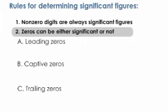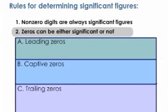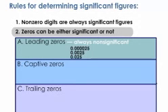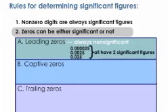Leading zeros are zeros that precede all nonzero digits, and they are always non-significant digits. So 0.000025, 0.0025, and 0.025 all have two significant figures.